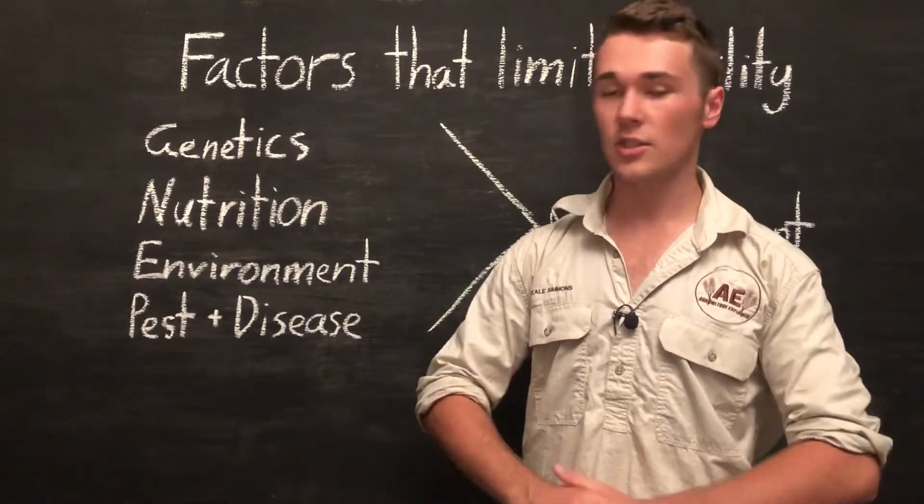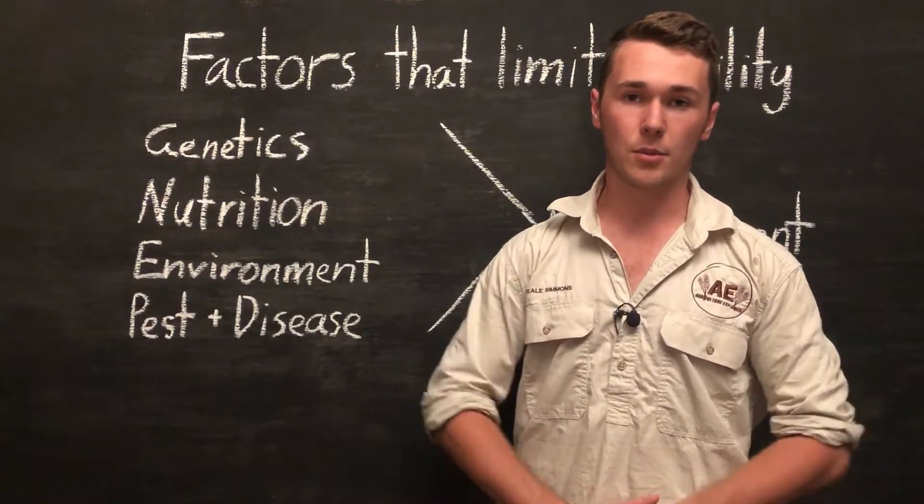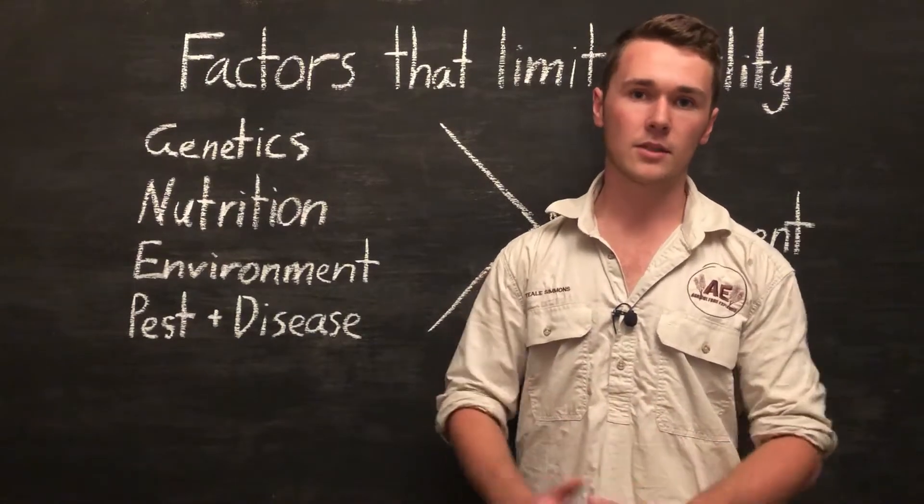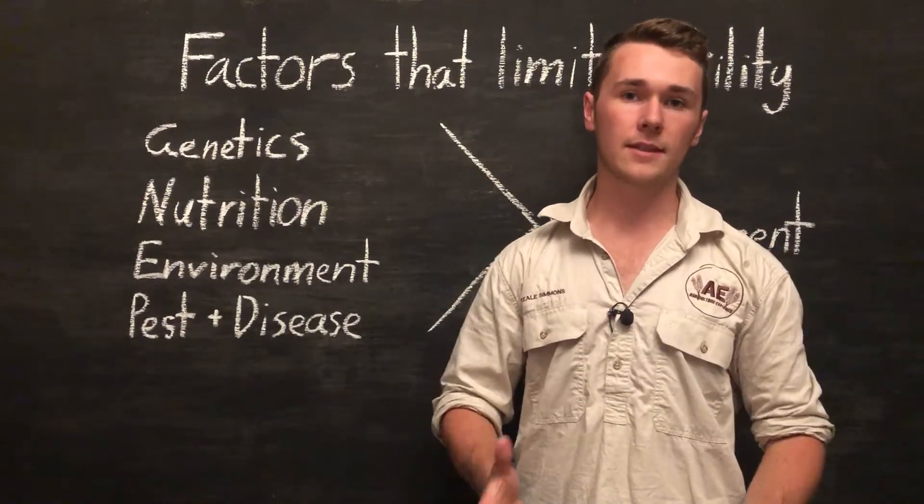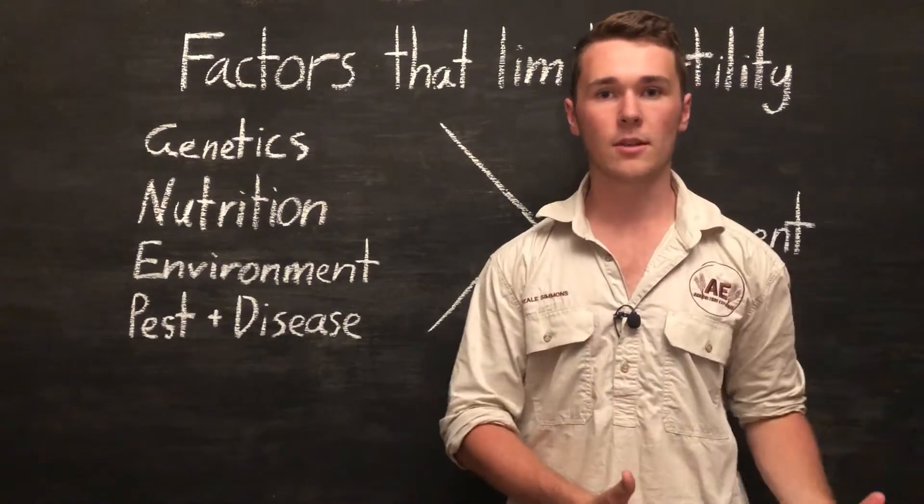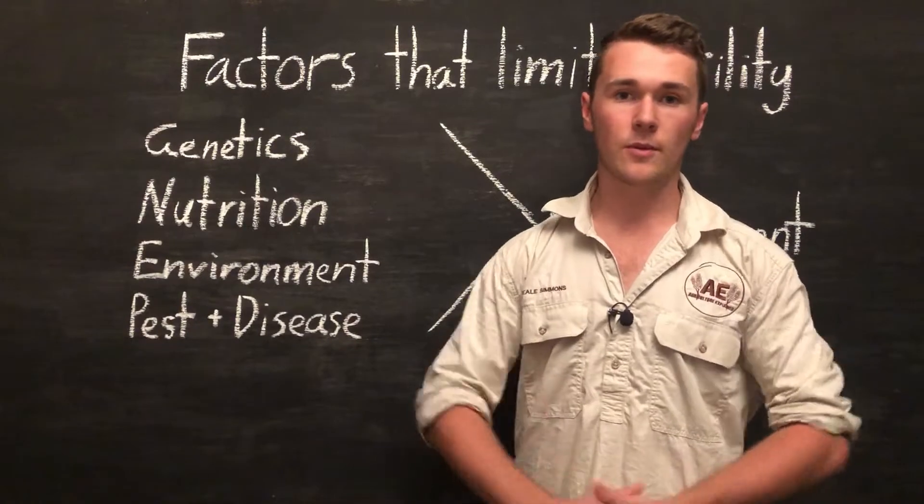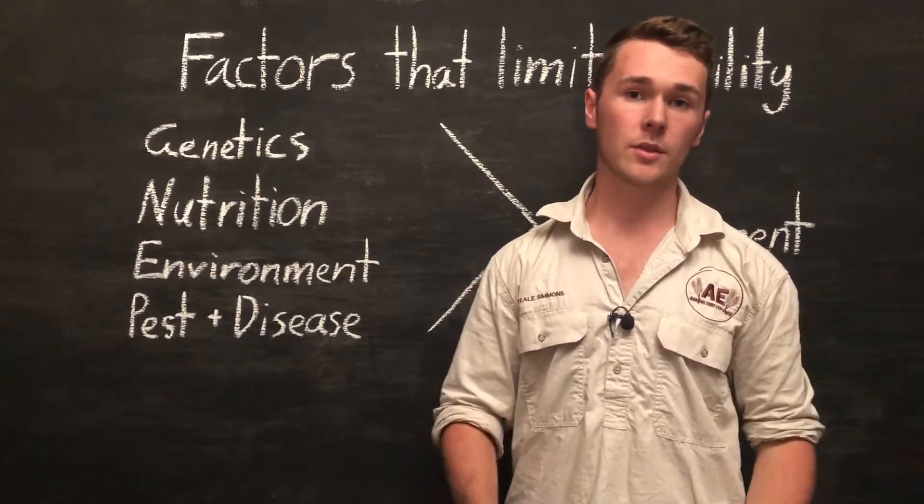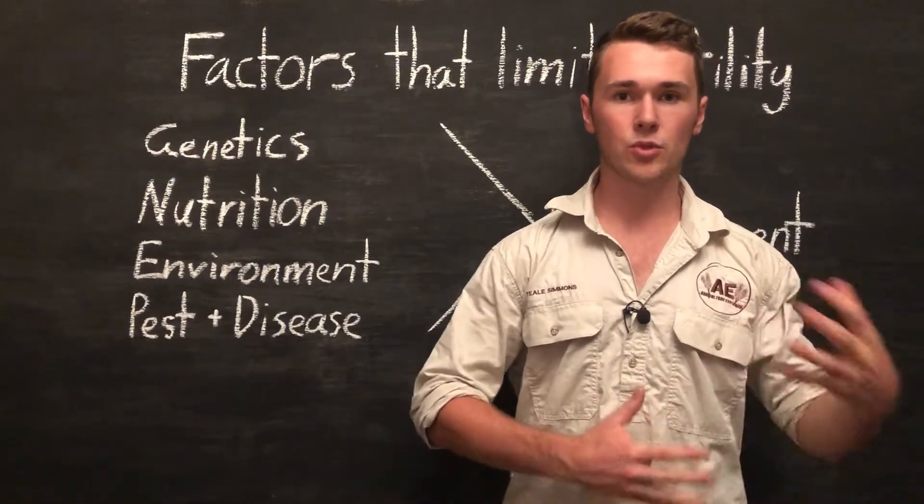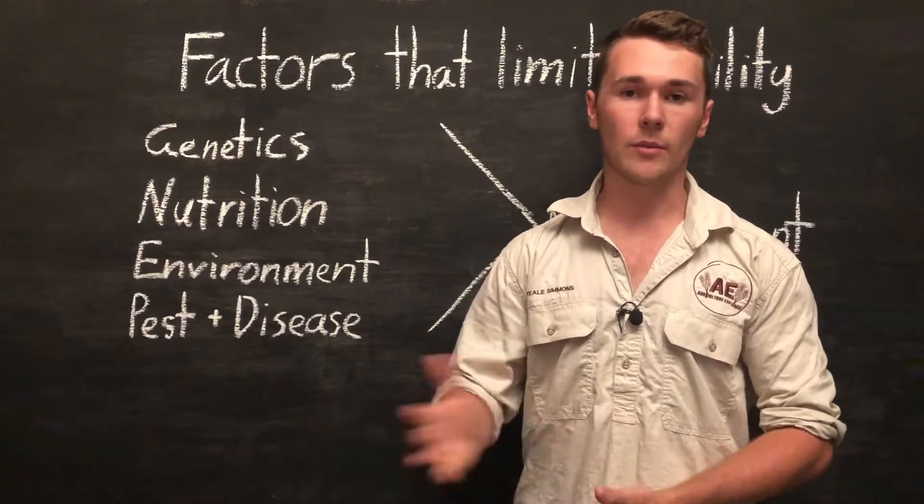Next what we can do is we can change our breeds. Now this would probably yield the most significant improvements to our farm, but first we need to consider different factors that different breeds will bring and how these factors will affect our enterprise. So for example, if we're running beef cattle, we're not going to change to dairy cattle because we want an increased chance of twins. But what we might do is change to some Bos Indicus cattle, which are more suited to warmer, more tropic climates, say if our farm was in an environment like that.